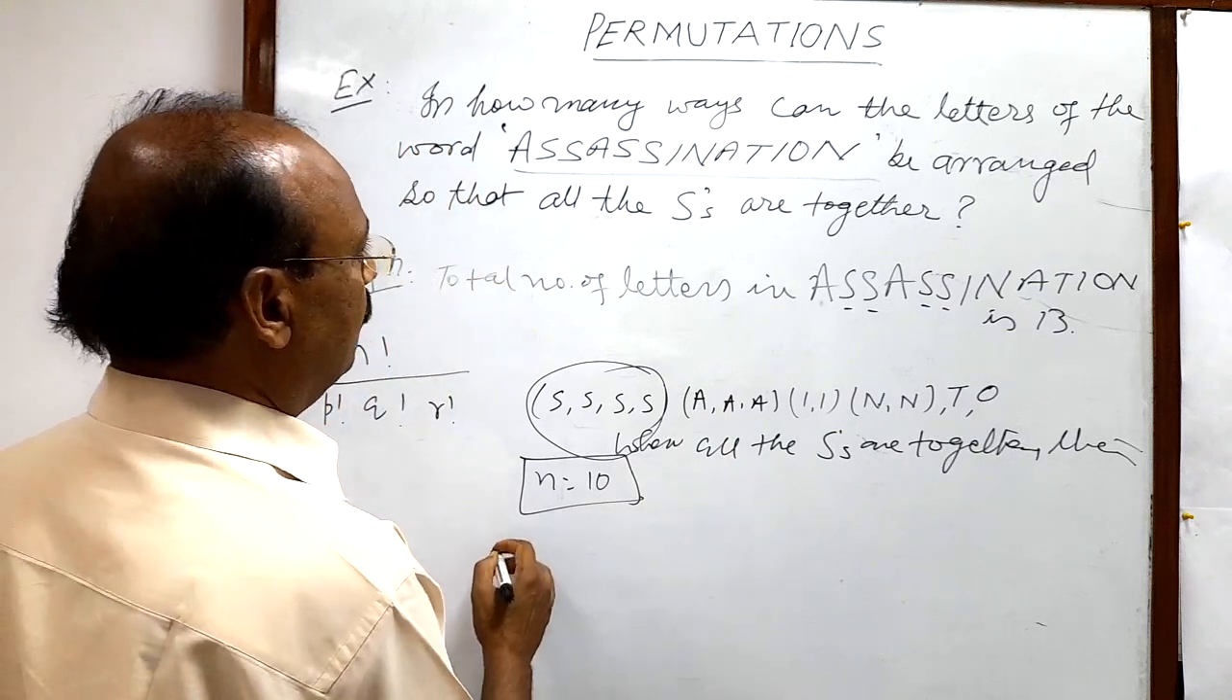So here number of arrangements when all the S's are together is equal to how much? Total number of letters this is treated as one object. So this is 10 factorial divided by,